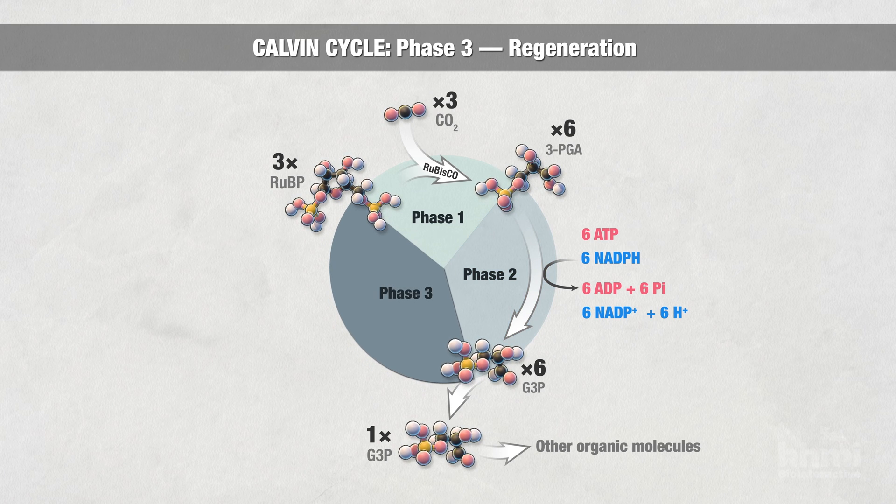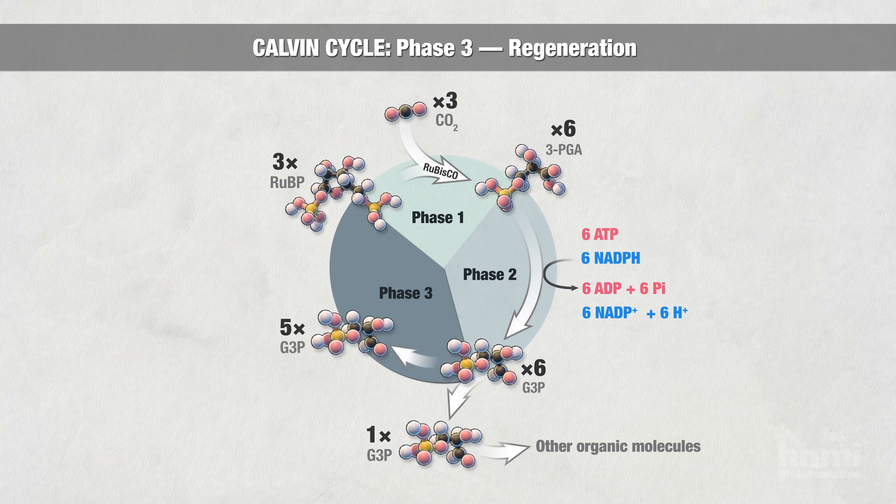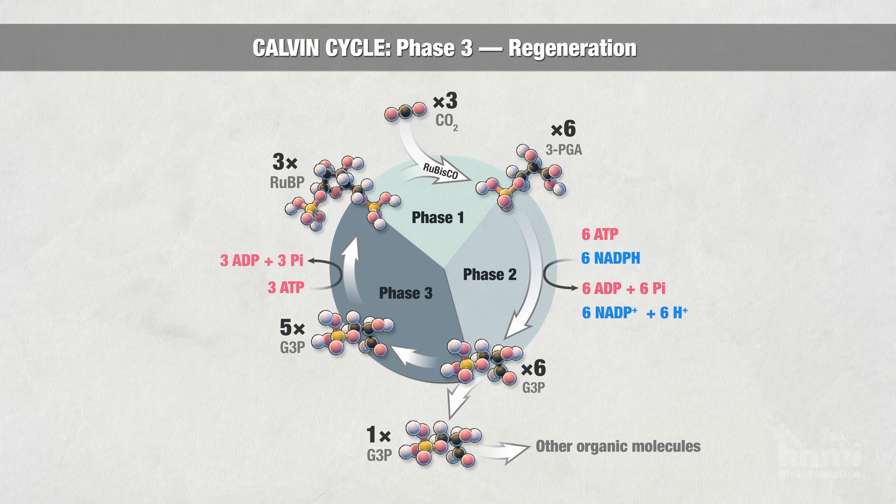In phase three, the regeneration phase, a large set of reactions use the other five molecules of G3P and energy from three molecules of ATP to produce three molecules of RUBP.